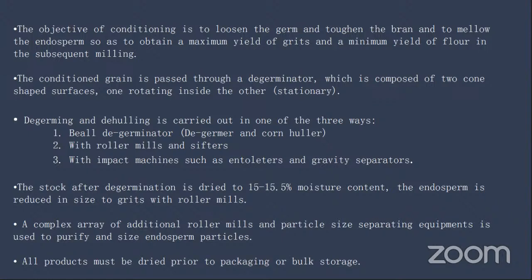After conditioning, the moisture content was raised to around 21 percent. Then the grain is re-dried to around 15 to 15.5 percent moisture content. After that, milling is carried out so that the endosperm can be converted into maize grits or corn grits. Once the corn grits are formed, they are graded according to their size.